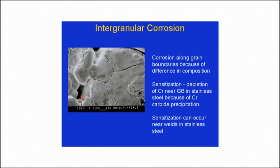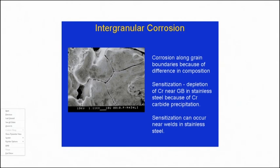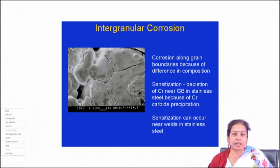If you talk about intergranular corrosion, as the name implies, it basically proceeds through the grain boundaries and subsequently leads to failure from the adjacent grain boundary regions of the component. In pure metal, the microstructure consists of grains and grain boundaries, and in alloys there are also different phases. Grain boundaries have a little bit higher energy than that of grains.